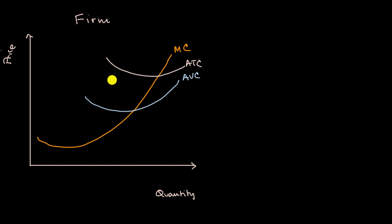And of course the difference between, for any given quantity, the average total cost and the average variable cost, that is the average fixed cost.